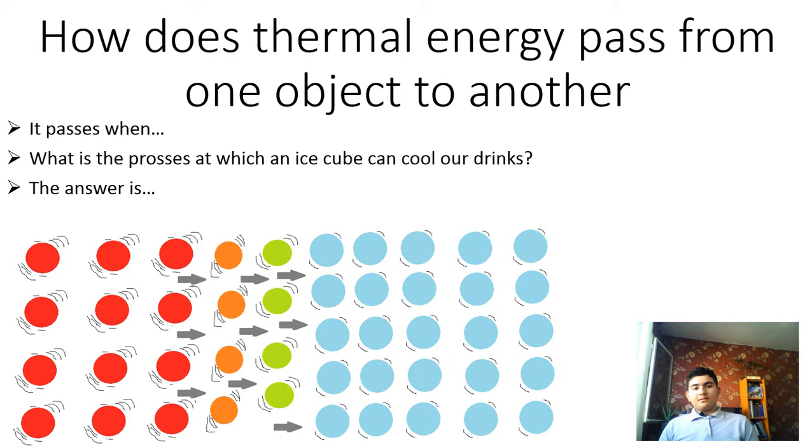The answer is: an ice cube cools our drinks not by adding coolness to our drinks, but actually by absorbing the thermal energy from the liquid. As the ice cube absorbs the energy or kinetic energy of our drink, the ice cube's molecules speed up. They gain the kinetic energy or thermal energy from our drink.